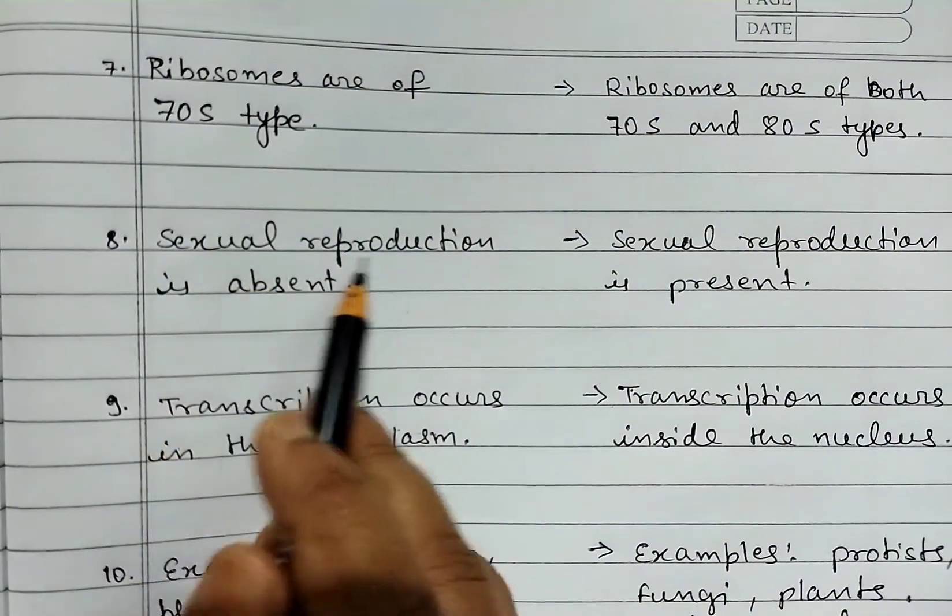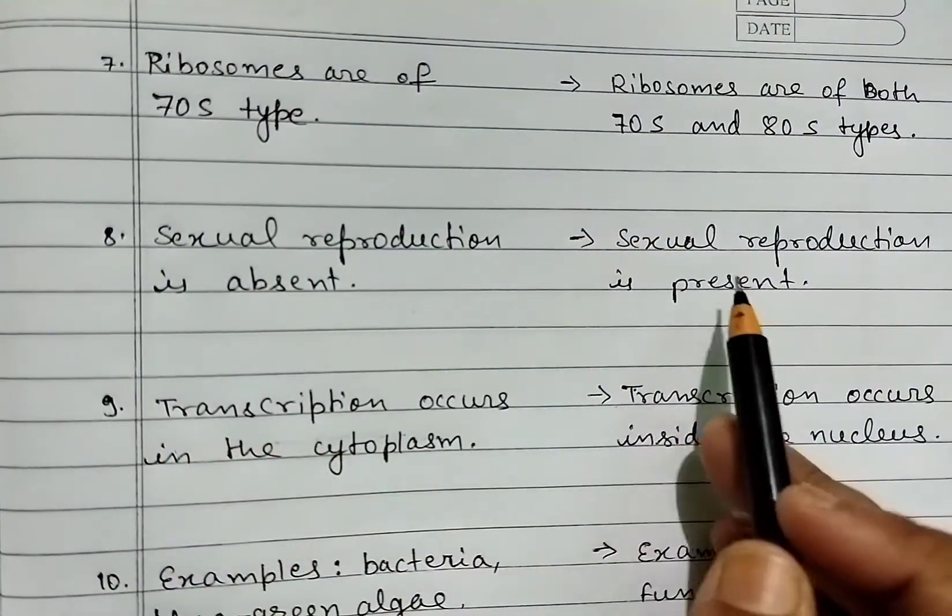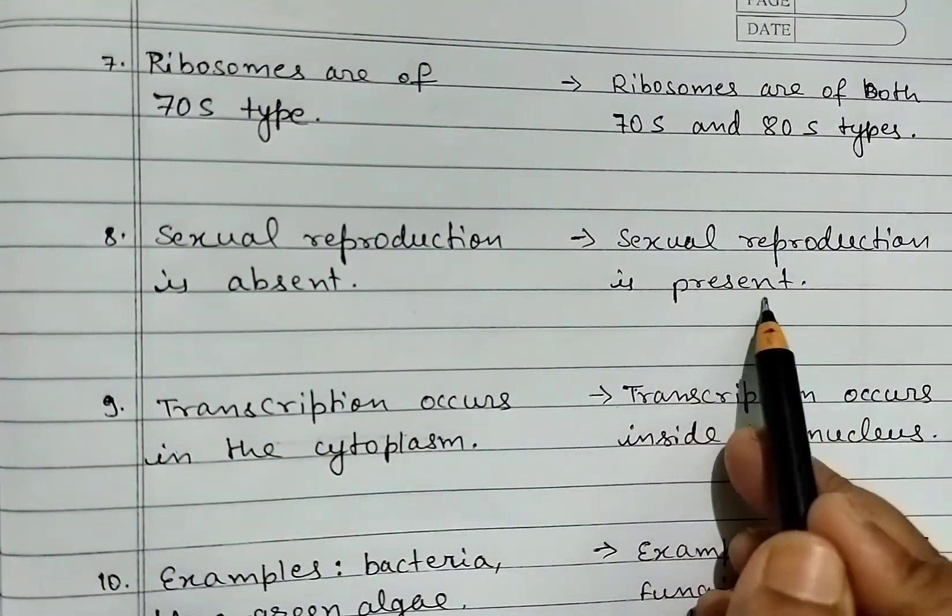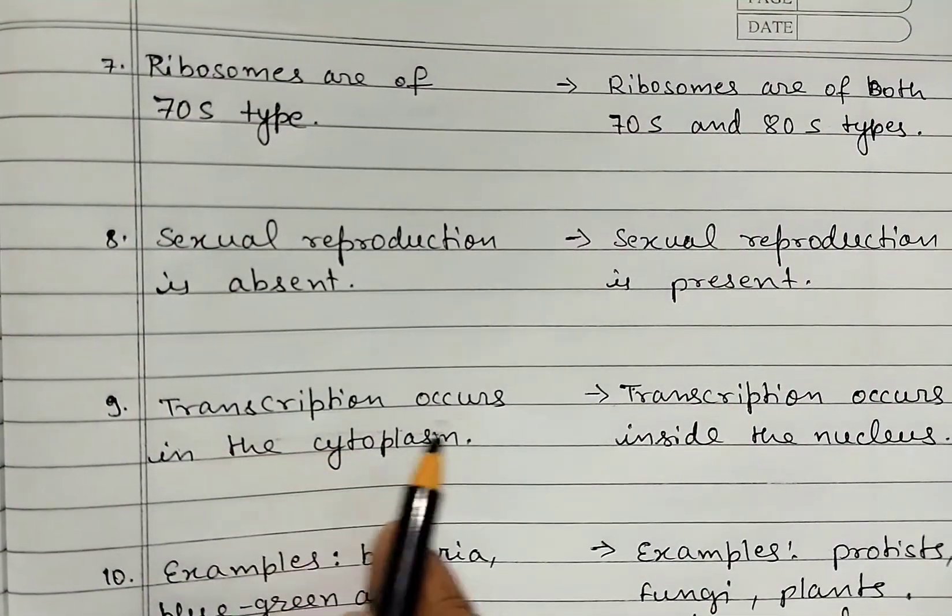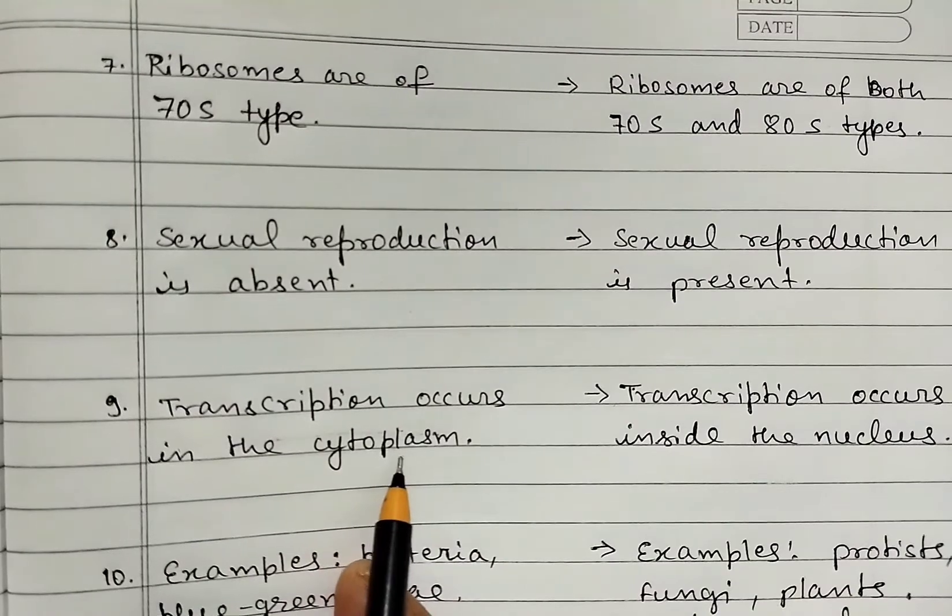Sexual reproduction is absent in prokaryotic cell. Sexual reproduction is present in eukaryotic cell. Transcription occurs in the cytoplasm in prokaryotes.